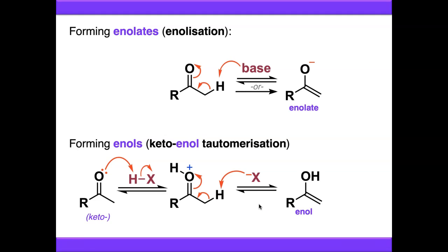The thing to note about keto-enol tautomerization is that it's always reversible. With enolization, you've got the possibility of forming an enolate irreversibly. But if you're forming an enol, it always happens with some degree of equilibria involved.